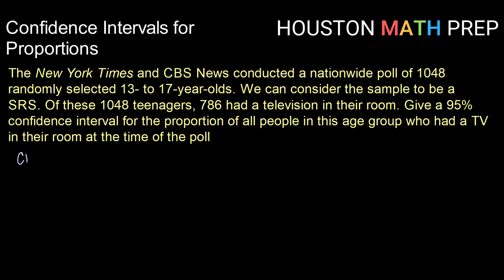Our confidence interval will be calculated by taking p-hat and adding or subtracting our margin of error. So let's start by calculating p-hat — that's the number of successes divided by the number in our sample. We had 1,048 teenagers and 786 said they had a television in their room. Calculating that, we get 0.75, or exactly 75%, as our sample proportion.